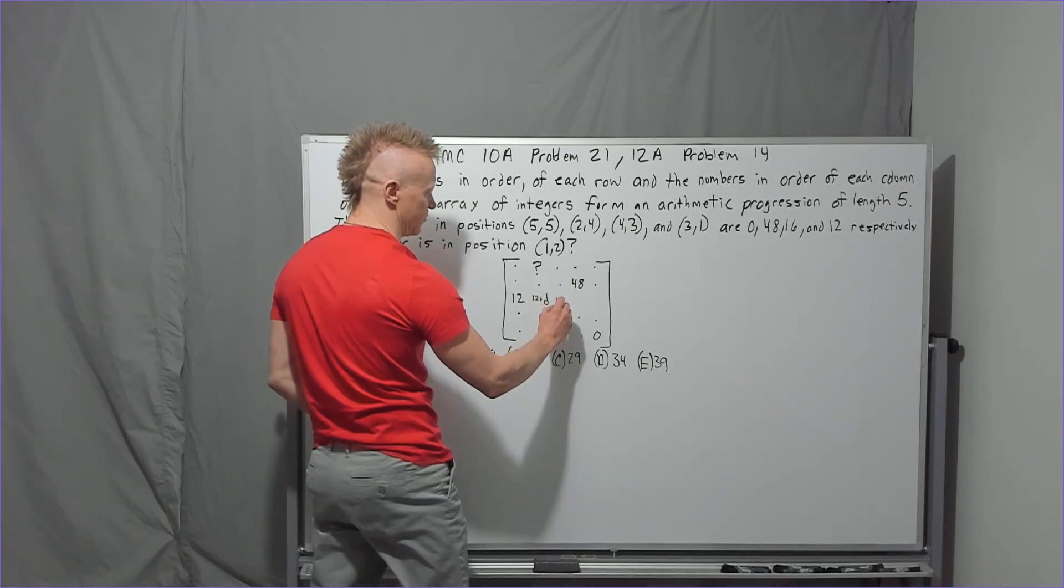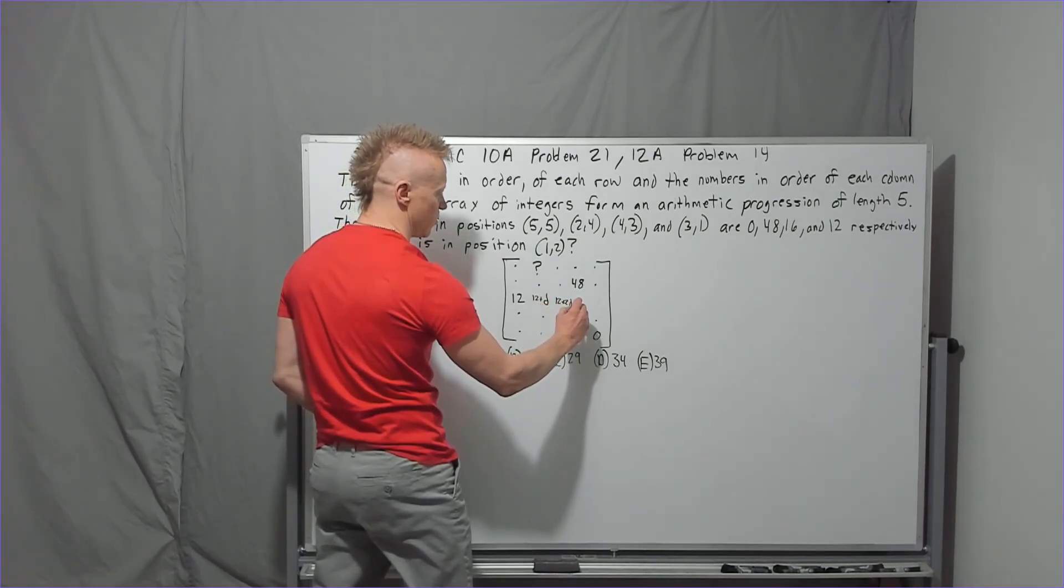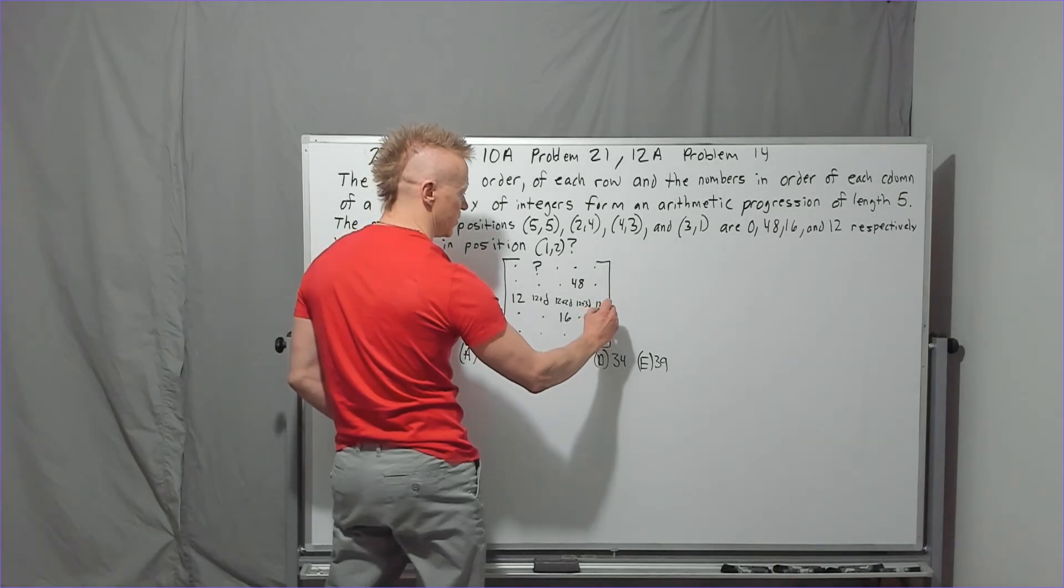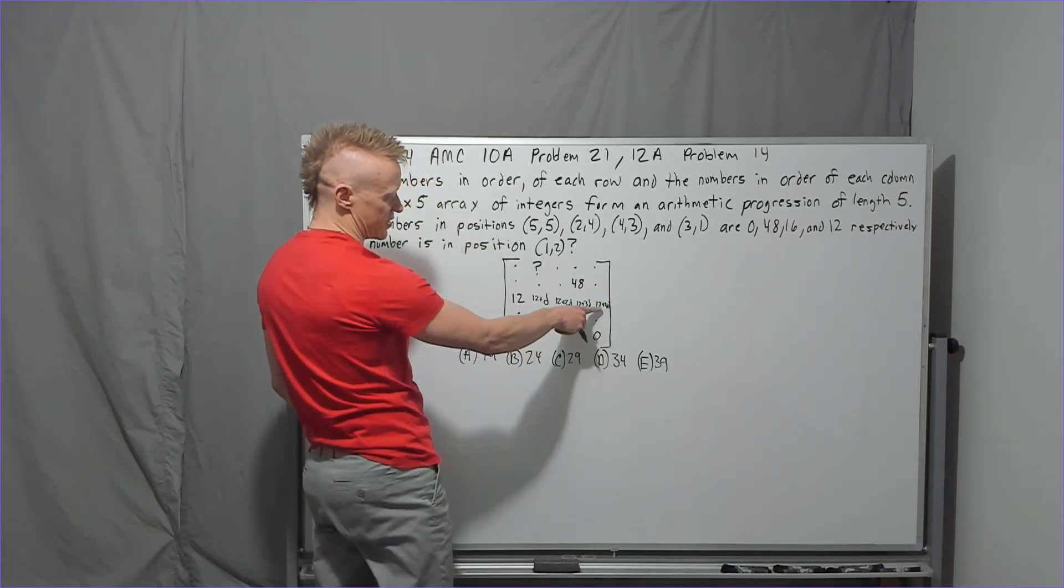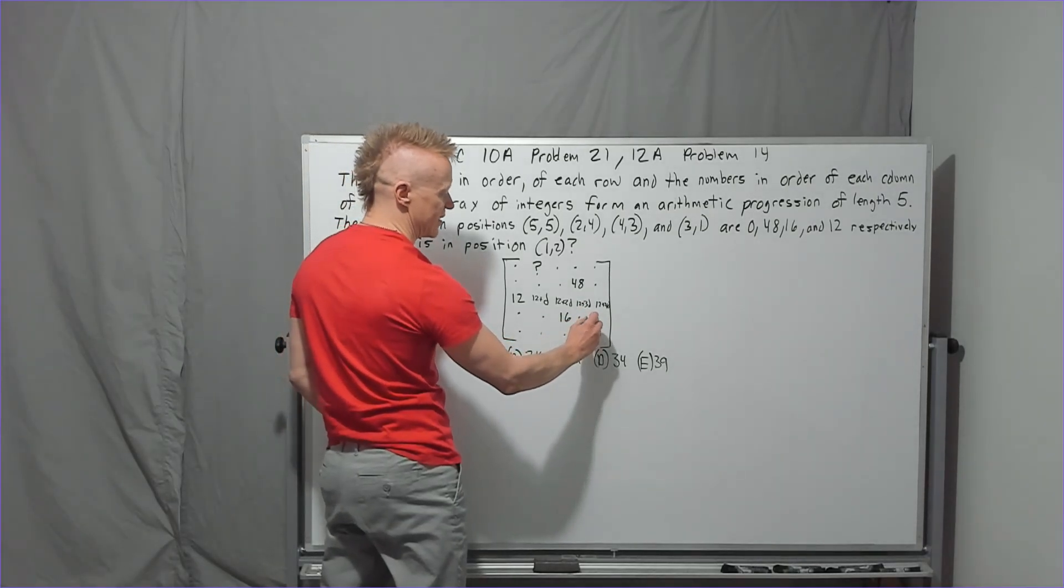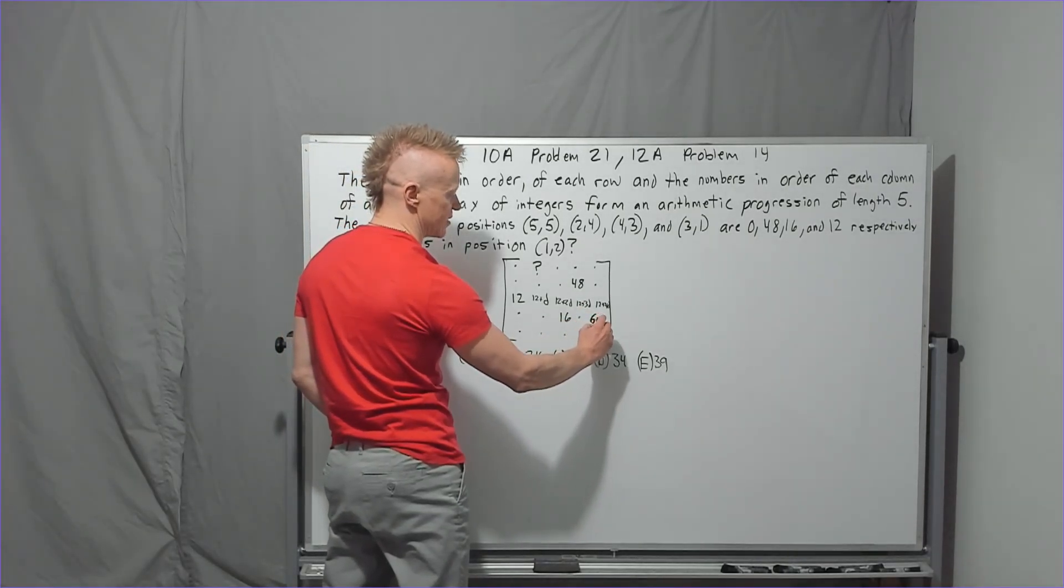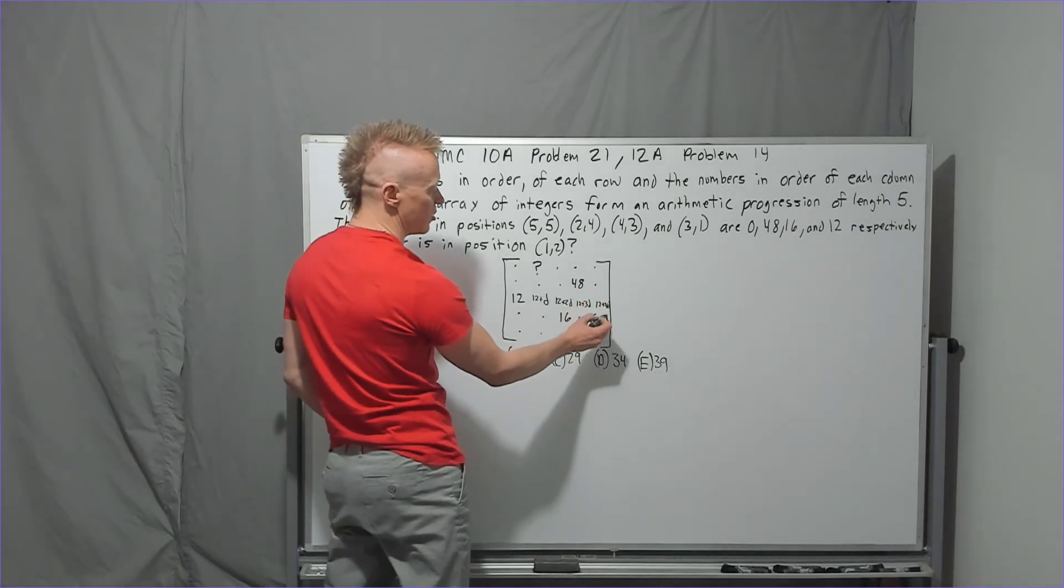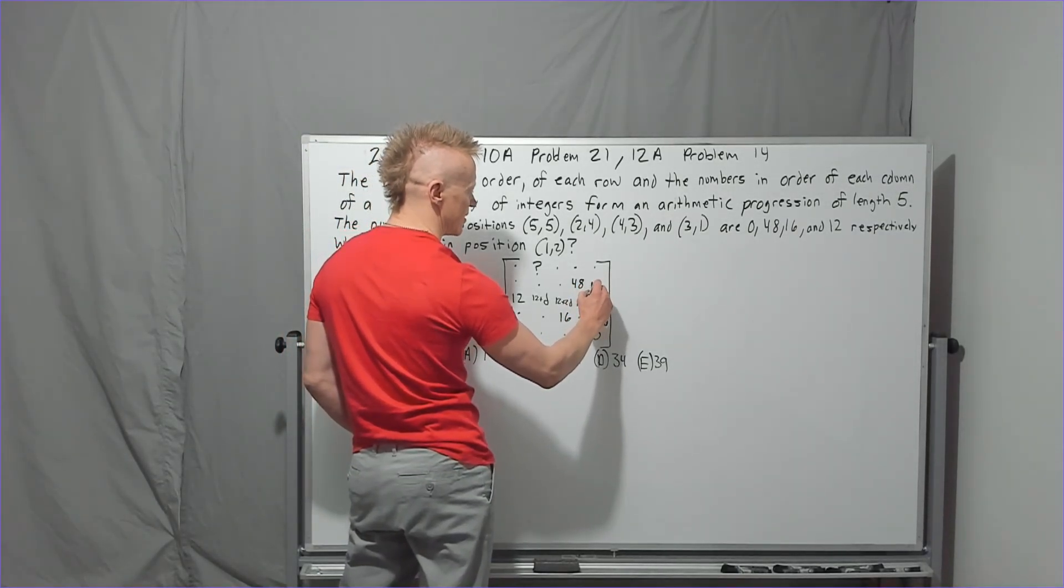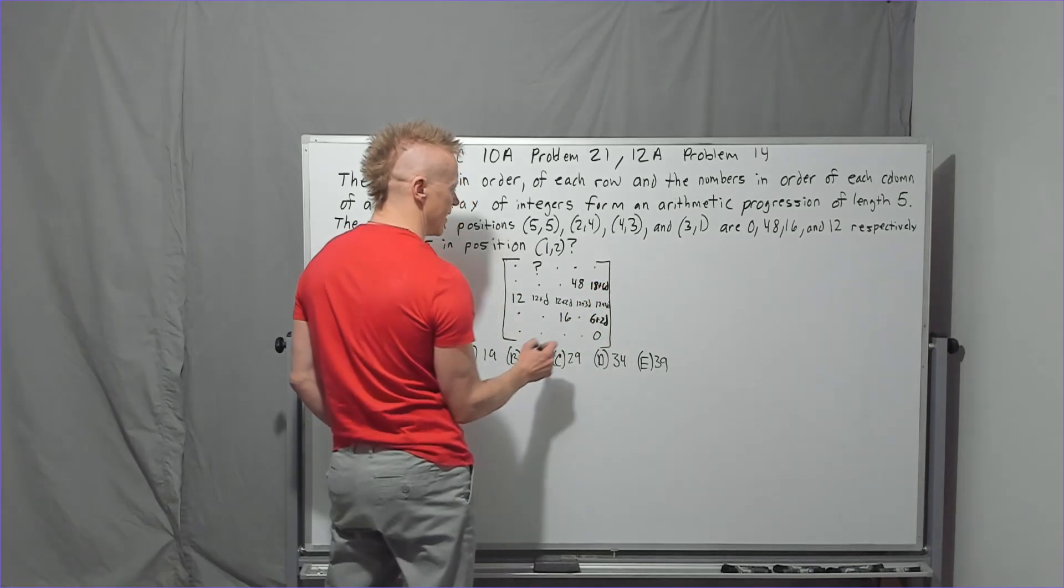12 plus D, this will be 12 plus 2D, 12 plus 3D, and finally 12 plus 4D. Now, of course, if that's 12 plus 4D, I can cut it in half and make this 6 plus 2D, because then it has to go down to zero. Going the other way, this would be 18 plus 6D. Okay, then what? What about 16?